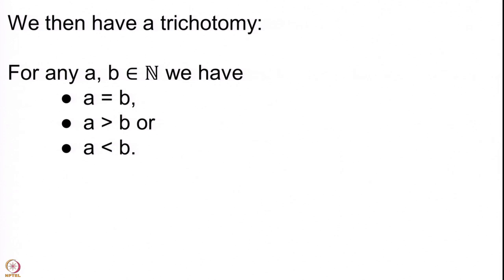So using this definition, 1999 is smaller than 2020, or 2020 is bigger than 1999. This is a relation on the natural numbers called the order relation, and it is a fantastic relation. Given any two natural numbers there is always some relation between them — this is what is called trichotomy.